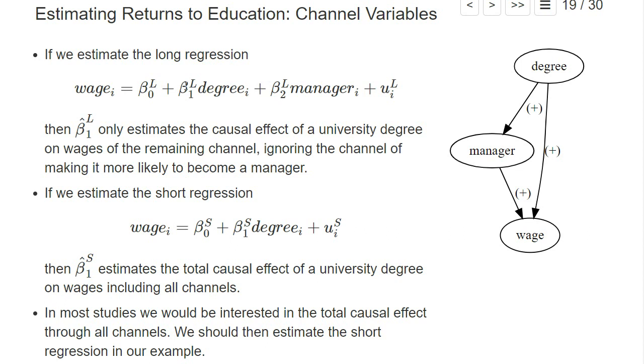Typically it's not so well described verbally which causal effect shall be estimated. What you typically do is you look at the regression equations. So for example, here we go back to the channel variable examples: if I would include manager as an explanatory variable, then I know that I only estimate the direct causal effect that's not through the channel that a higher degree makes it also more likely to become a manager.